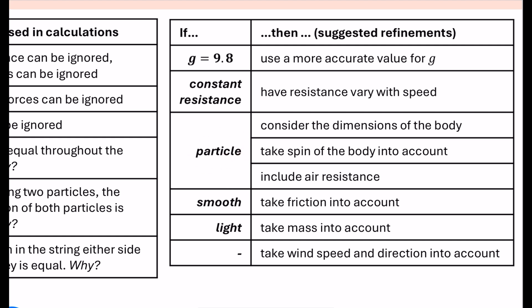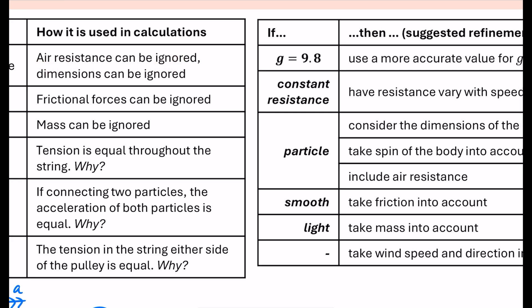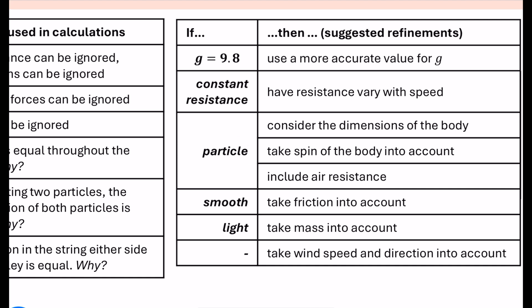If it is being described as a particle, obviously check the context of the question. We could say that we could consider the dimensions of the body, particularly if we're talking about like a box that was sliding down a plane. It might be useful to know in terms of how far the box has slid, how big the box actually is. If we're talking about something that is being thrown or projected in the air, if it's a particle, we could say, OK, let's take the spin of the body into account, meaning it might not go in a direct pathway of it's being thrown. And of course, we can also include air resistance. As we talked about here, we said as particle means that we can ignore air resistance. So if we criticize the use of modeling as a particle, we could take air resistance into account.